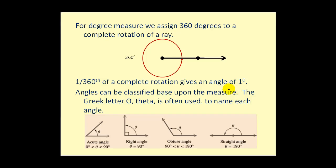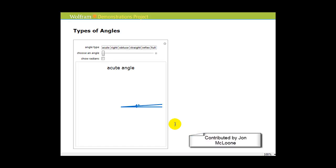Angles can be classified based upon their measure. The Greek letter theta is often used to name each angle. So let's take a look at the different types of angles. If an angle measures between zero and ninety degrees, as we see here, it's called an acute angle.